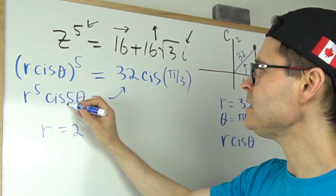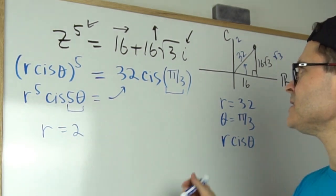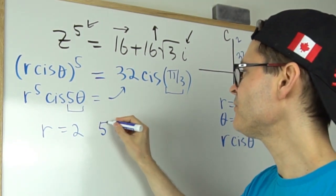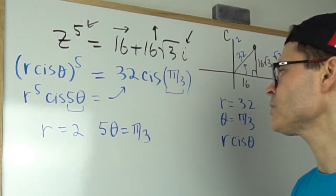And also, I can make an equation on the arguments. So that means that 5θ is equal to π by 3. So 5θ is equal to π by 3.